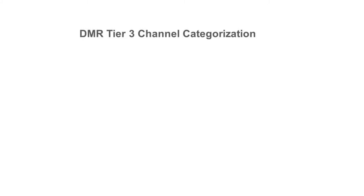In DMR Tier 3, each channel can be categorized in two ways: firstly, as a control channel carrying signaling, or as a traffic channel - sometimes called a payload channel - where the payload is voice packets or data packets.